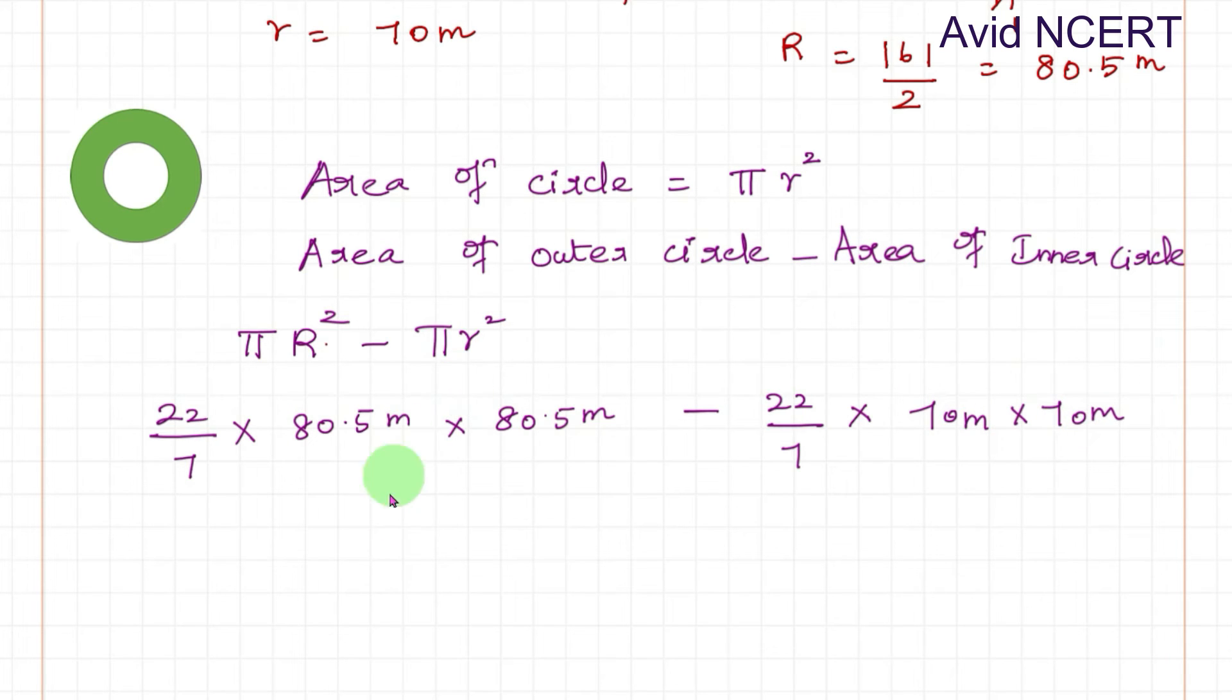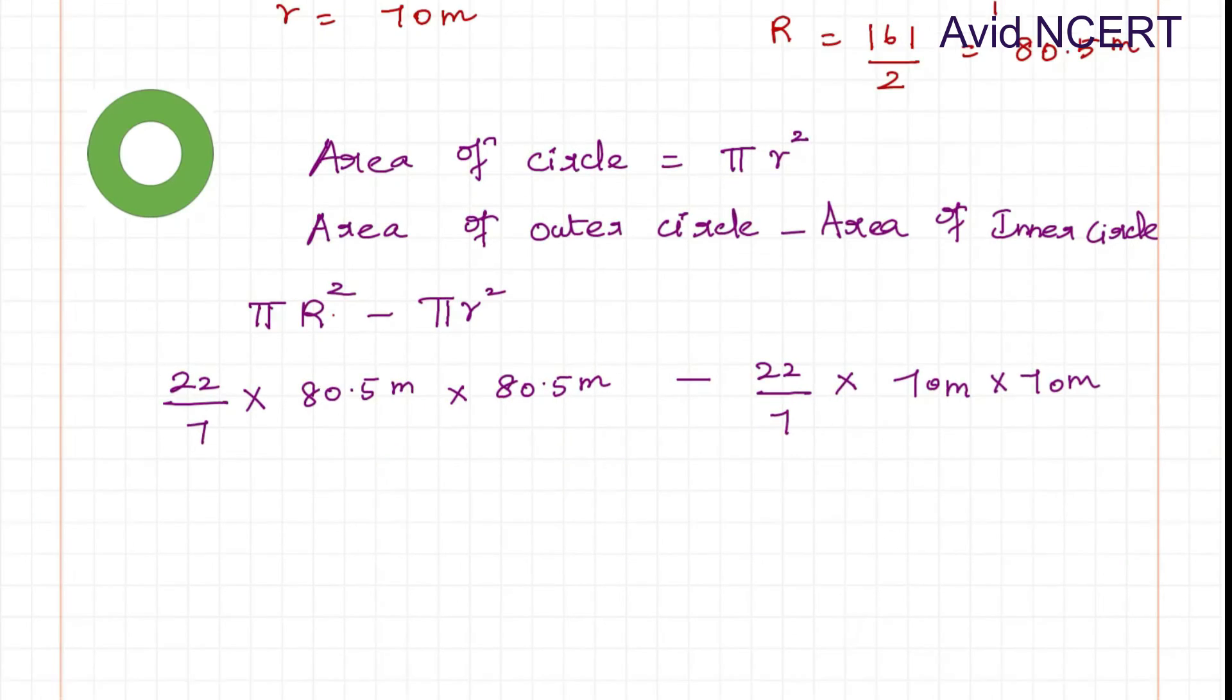This can be simplified by whichever method is easier for you. We can take the 22 by 7 common out and do the multiplication and subtraction, or simplify and do the subtraction. Or you can substitute 161 divided by 2 directly: 22 divided by 7 times 161 divided by 2 times 161 divided by 2, minus 22 by 7 times 70 meters times 70 meters. You can do any of these methods.